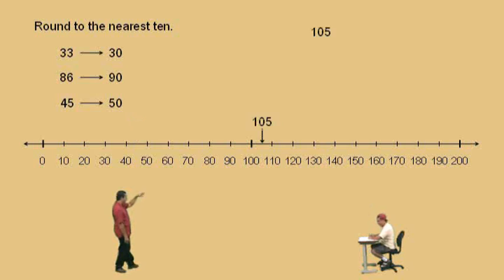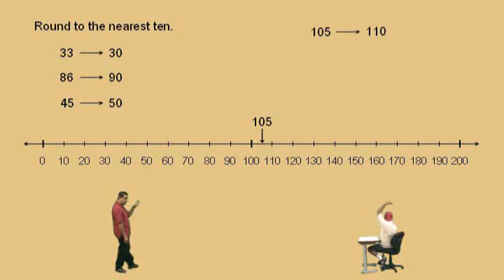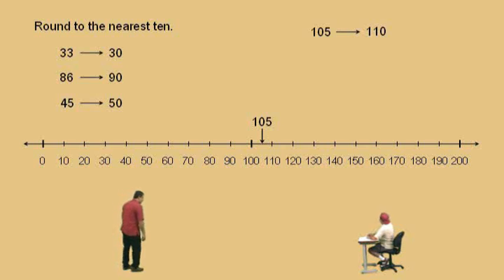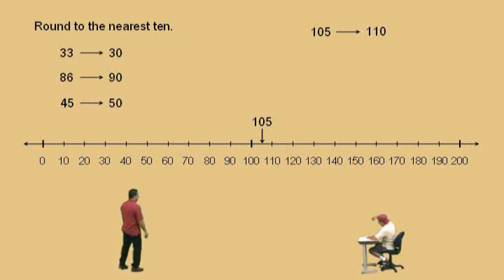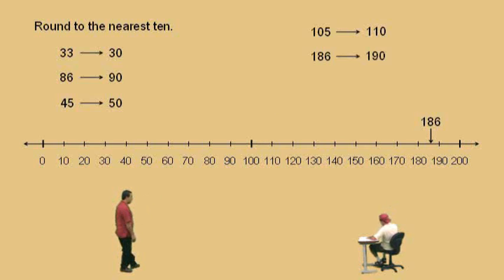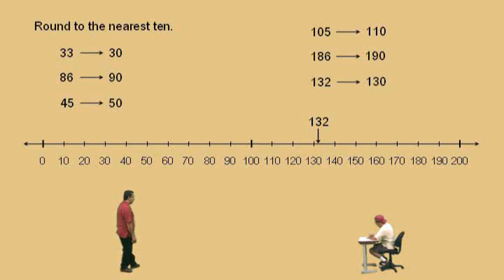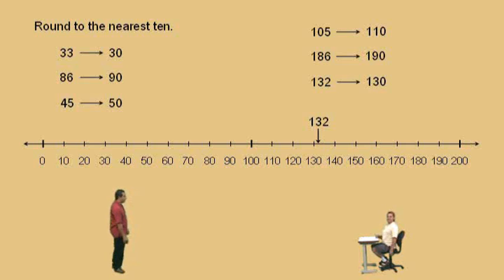Now, 105 — where does that one round to? Remember, we're in the middle, so it rounds to the right, and that gives you 110. Very nice, Charlie. Okay, 186 — that rounds to 190. Very nice, and 132 rounds to 130. Very nice there, Charlie. So let's continue on.